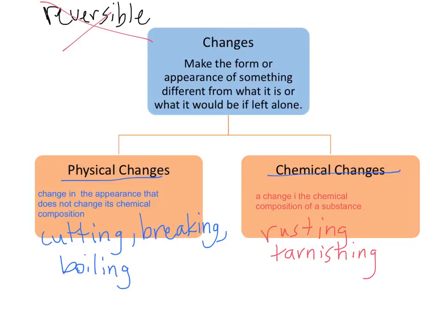Whereas some chemical changes are reversible. It can go back and forth between the reactants and the products, even though it's an actual chemical change. So kind of get that out of your mind. Reversibility is not a hallmark of physical or chemical changes.